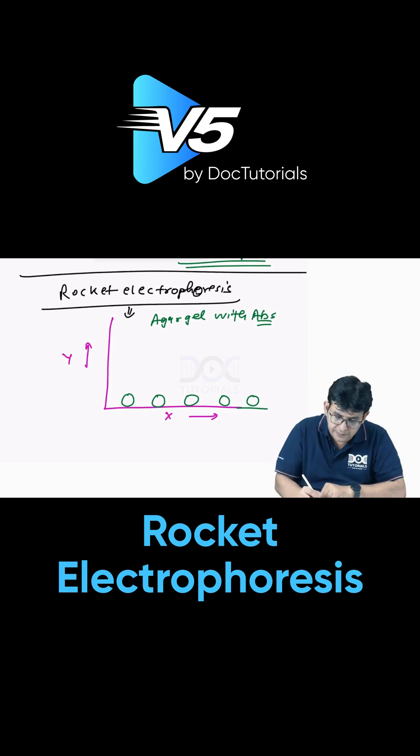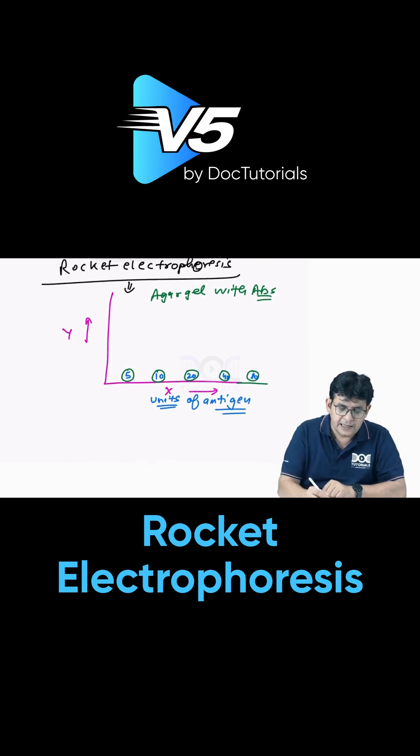In these particular holes, you put antigen. Suppose in the first one you put 5 units, then 10 units, then 20, then 40, then 80. These are units of antigen put in ascending order.